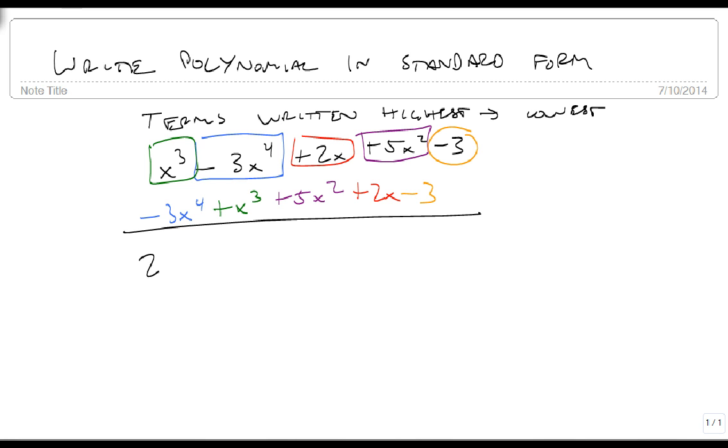If we're given something like 2x squared, minus 3xy, plus 5y squared, where we have multiple variables, we just look at each term. This is degree 2, degree 2, degree 2.